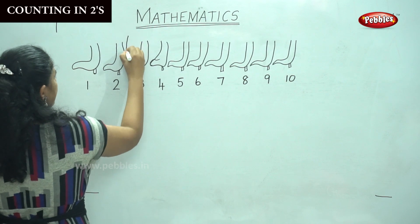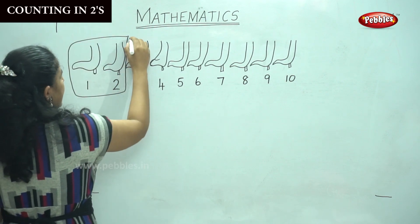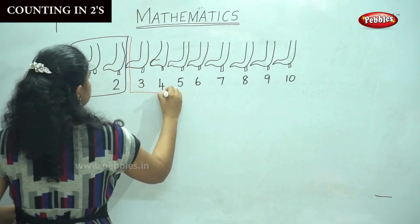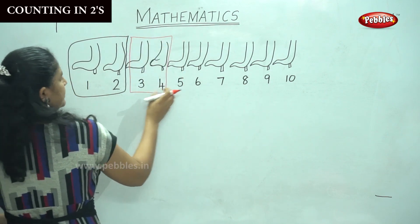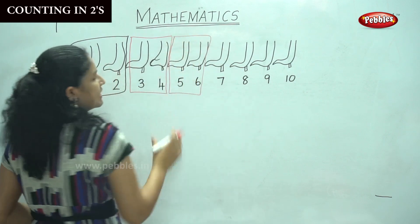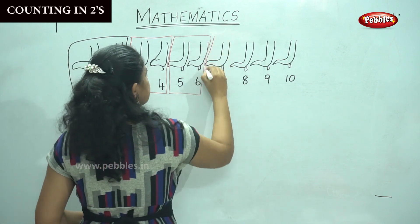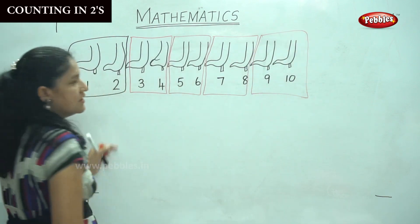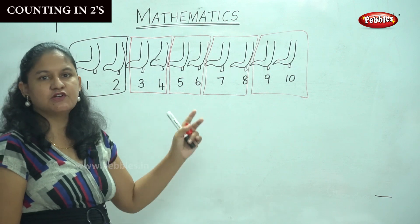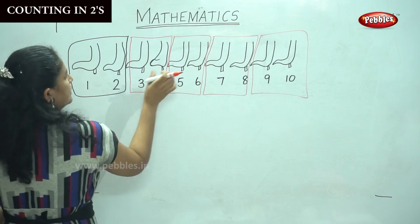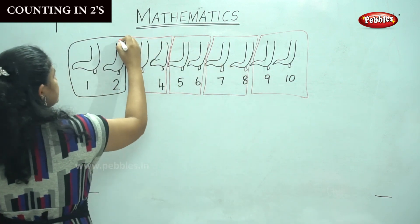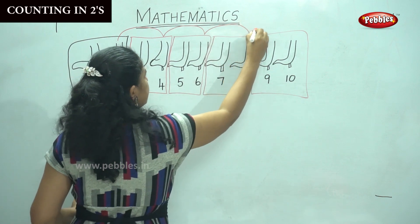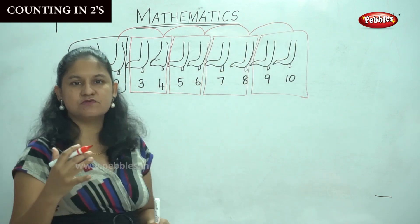So I have the first pair of shoes, which is two. Then the next pair of shoes is four. I am grouping them in pairs in twos. So I have five pairs of shoes grouped into two each. Two, four, six, eight, ten. So from two I go to four, then six, eight, and ten. This is counting in twos.